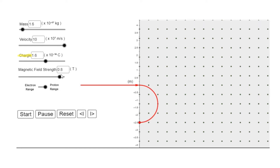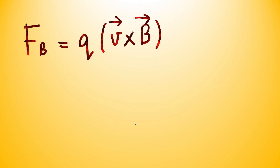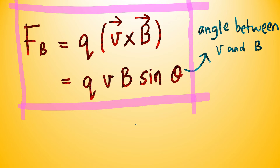That means a bigger force acts on the particle as the strength of the magnetic field increases. We have discussed the two factors that influence the magnetic force: the charge of the particle and the magnetic field strength. The equation for magnetic force on a charged particle in a magnetic field is F = Q(V × B), which is equivalent to QVB sinθ, where θ is the angle between V and B.